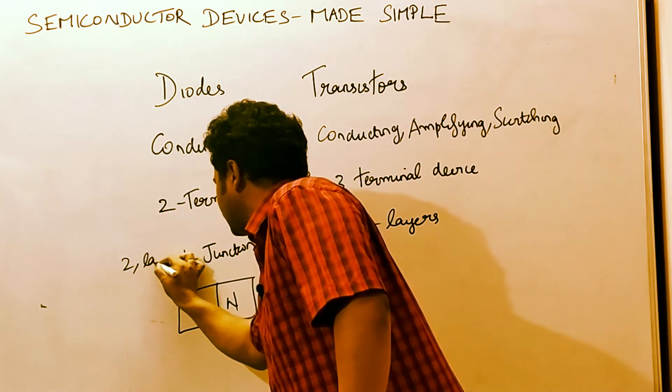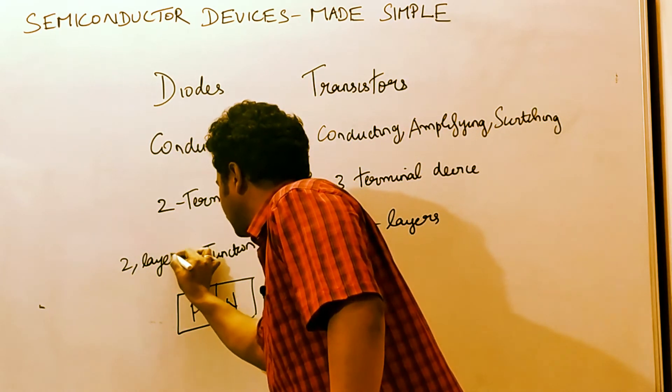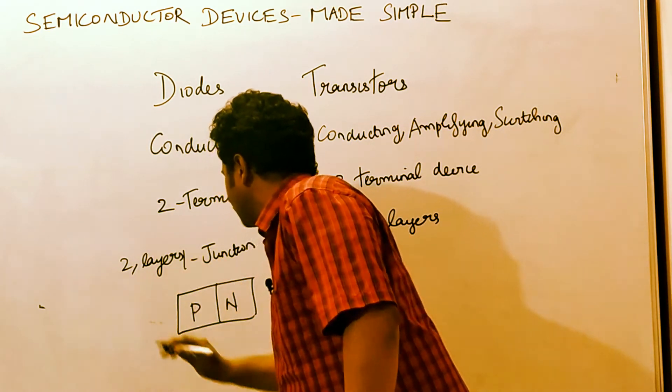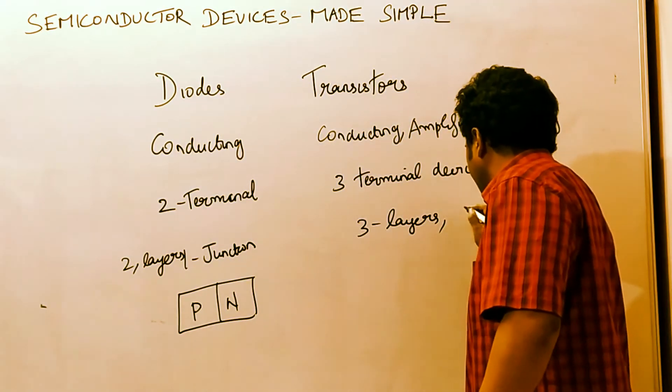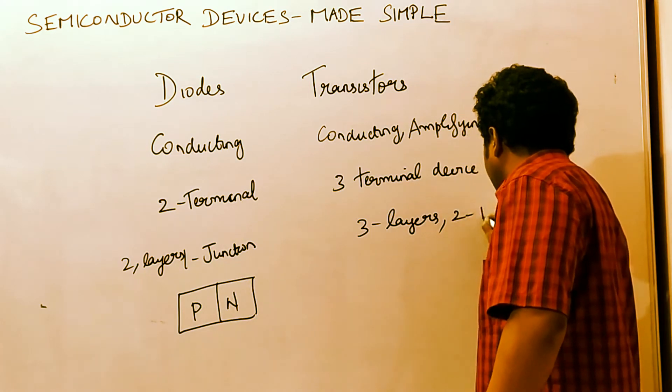So the diode has two layers and one junction, whereas the transistor has three layers and two junctions.